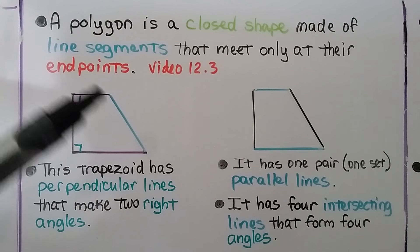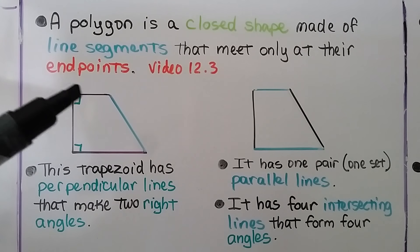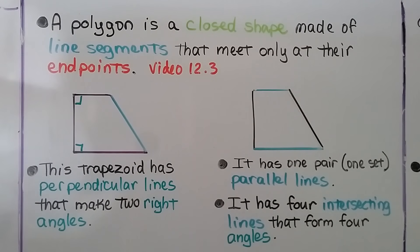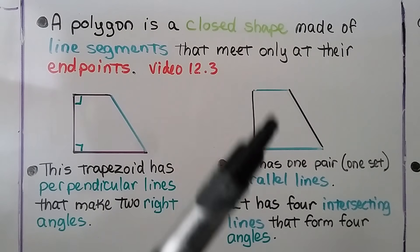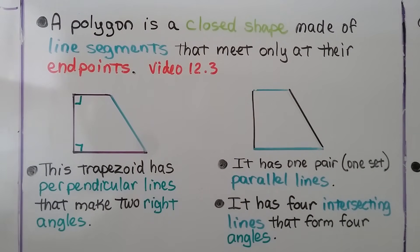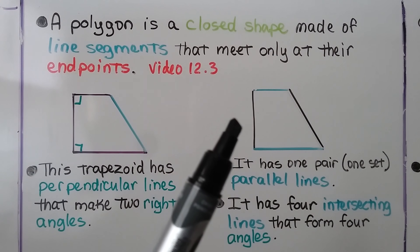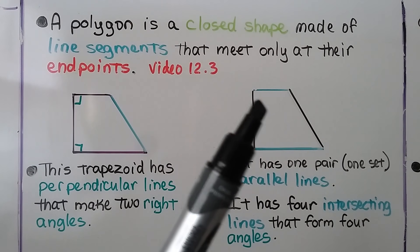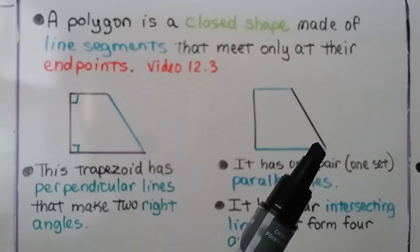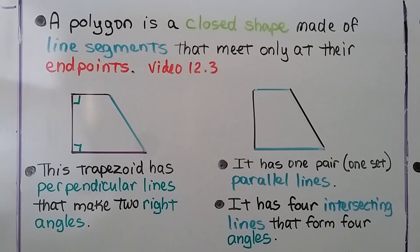So here's a trapezoid. It has perpendicular lines that make two right angles, and it has one pair of parallel lines. And it has four intersecting lines that form four angles inside.